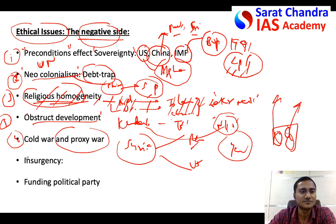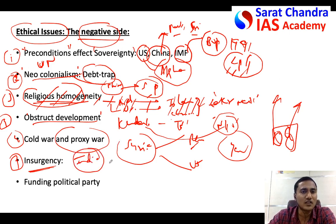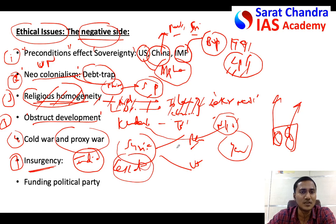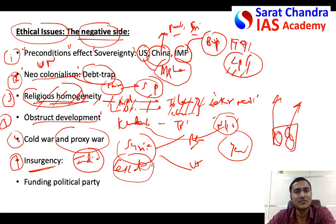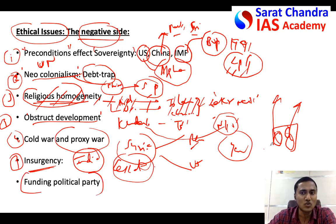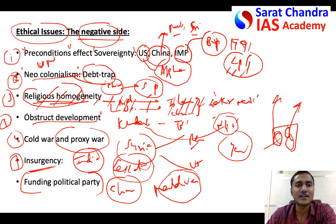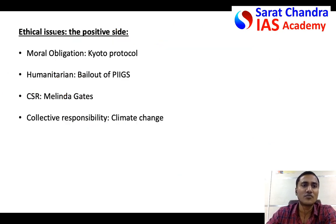Another aspect is funding insurgency. For example, in India the Khalistan movement gets international funding from Pakistan. Certain organizations working for the separation of Kashmir, Punjab, or Nagaland get funding from Pakistan and some other countries. Additionally, China funds certain political parties in the Maldives to bring them to power so that the Maldives will follow what China dictates.